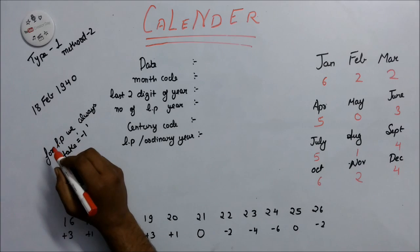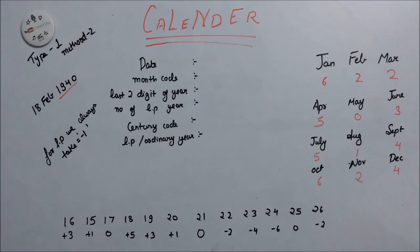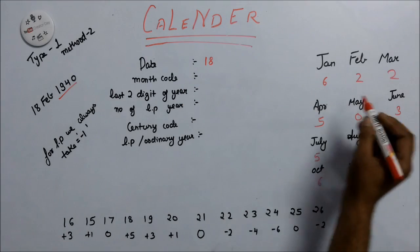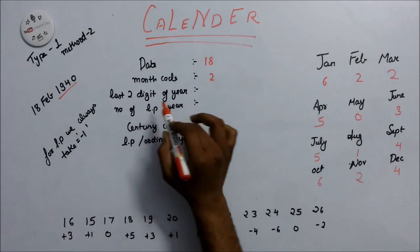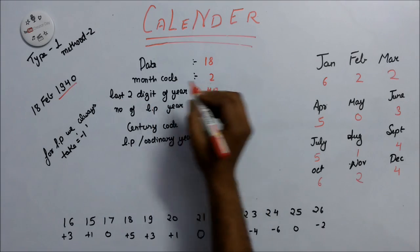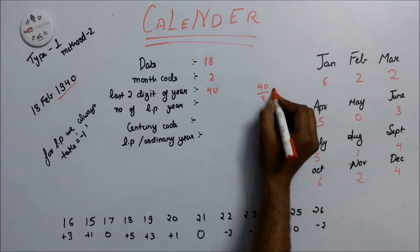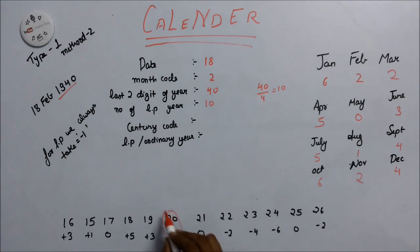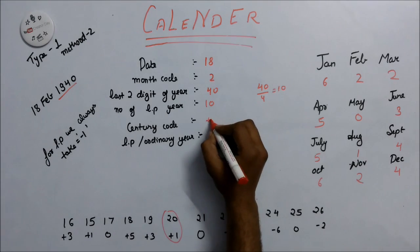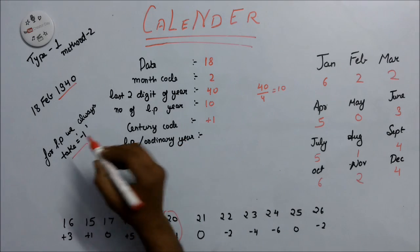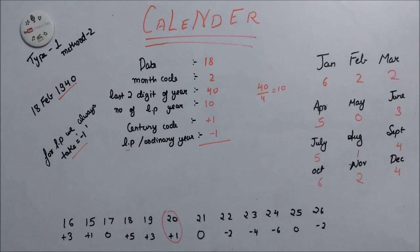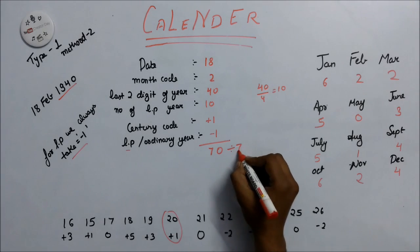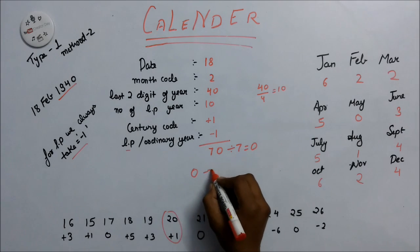Now we solve a question involving a leap year in a different century: 18th February 2040. Date is 18. Month code for February is 2. Last two digits are 40. Number of leap years: 40 divided by 4 equals 10. Century code for the 20th century is plus 1. It is a leap year, so we assign minus 1. Adding: 18 plus 2 plus 40 plus 10 plus 1 minus 1 equals 70. Dividing 70 by 7 gives remainder 0. Since 0 indicates Sunday, the answer is Sunday.